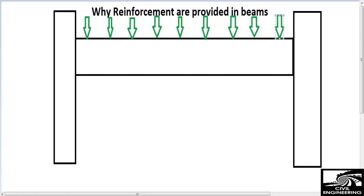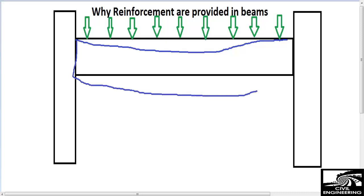Now I'm showing you that under this loading condition, the beam will show deflection. It will follow a deflection path like this. If we provide no reinforcement in the beam, it will deflect in that way. It will deflect more at the bottom, in this region, as I'm showing you.